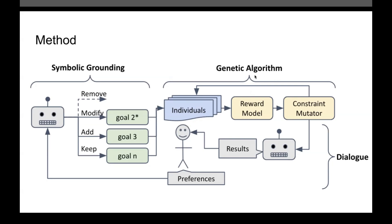The genetic algorithm starts from a set of constraints generated by the LLM, and then duplicates and mutates those into a broad initial population that covers a good diversity of the available constraints. We then use an LSTM-based reward model to take in the plans resulting from passing those constraints through a symbolic planner, along with each of the symbolically grounded goals, to determine how many of those goals that plan actually adheres to.